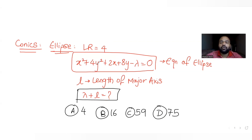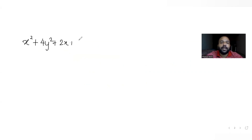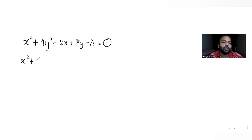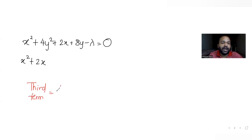Let's find the value of λ. Starting with our general equation: x² + 4y² + 2x + 8y − λ = 0. I'll convert x² + 2x into a perfect square by adding the third term, which is (half the coefficient of x)² = 1² = 1. So I'm adding 1 here.